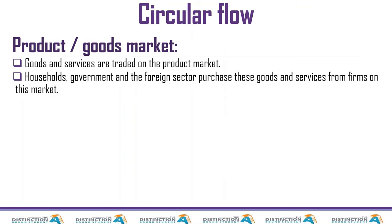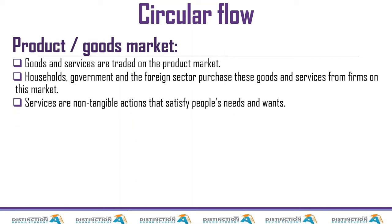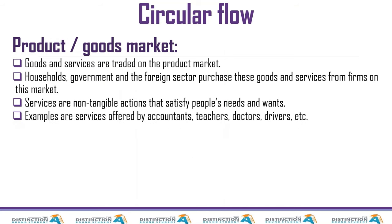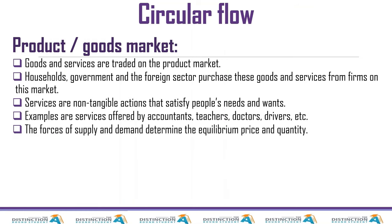Households, government, and the foreign sector purchase these goods and services from firms on this market. As we saw in the circular flow model, after we get our income we pay tax, then we spend — and at the end of the day we spend money on the product market. Services are non-tangible actions that satisfy people's needs and wants, so they are different from goods because goods are tangible. Examples of services are those offered by an accountant, an educator, a doctor, a driver, etc. Forces of demand and supply determine the equilibrium price and quantity.